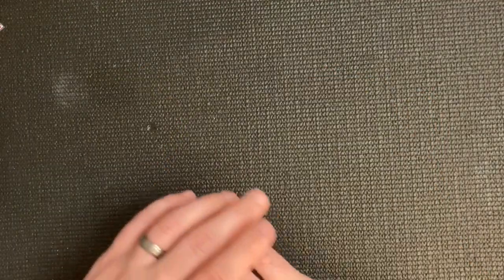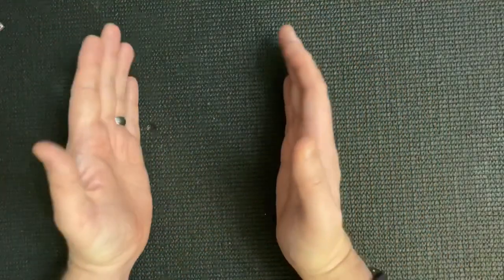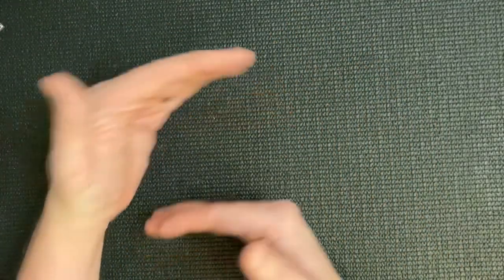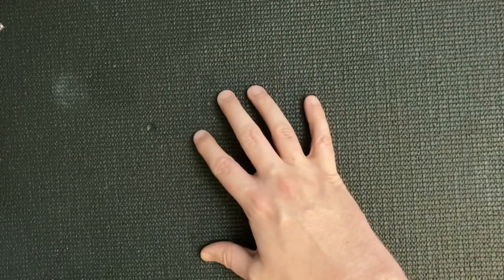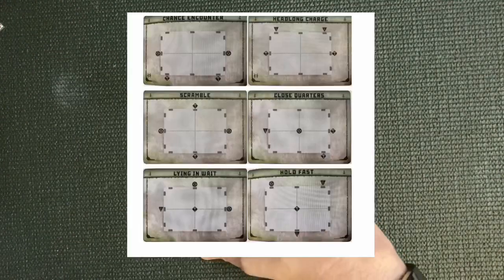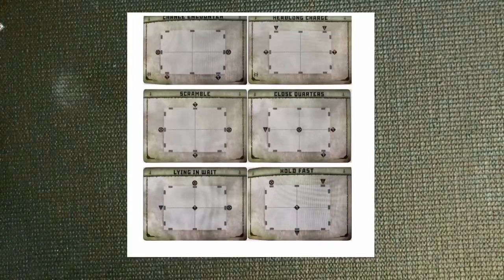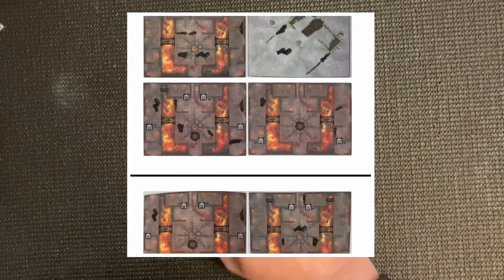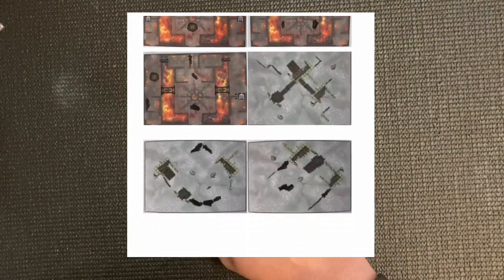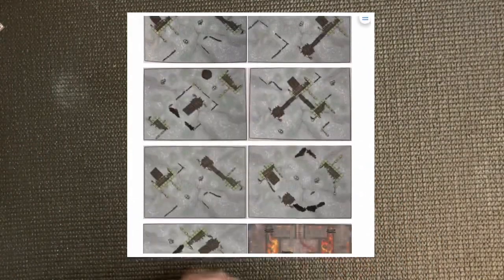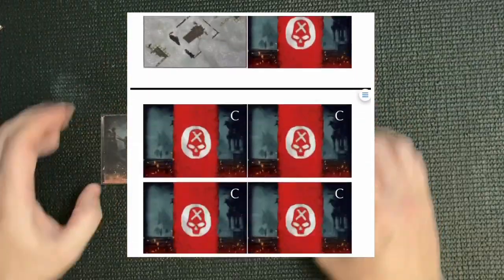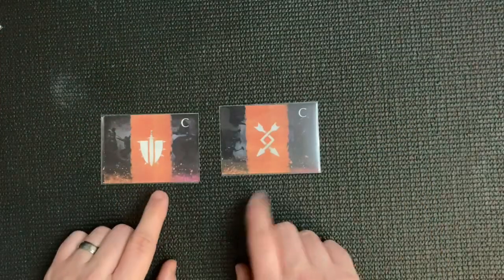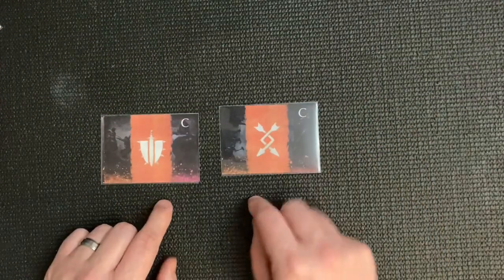Take all those photos, and once you've cropped everything square, drop them into a Word document. Then resize each individual image to 6.35 centimeters by 8.90 centimeters.